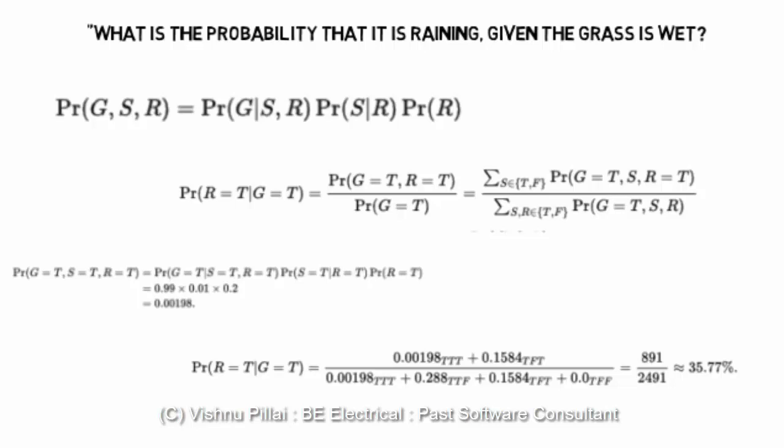Based on this formula, you can find that the probability that it is raining and the grass is wet is close to 35.77 percent. Based on this, you can answer certain questions like what is the probability of the grass being wet if it is raining.